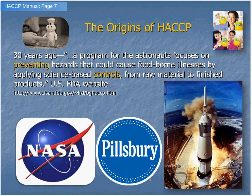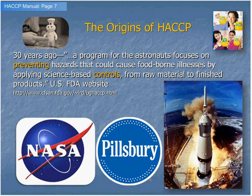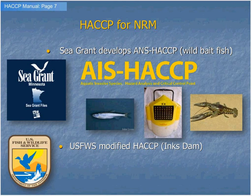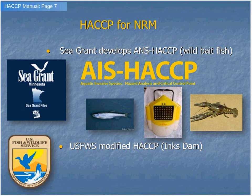HACCP gets its origins from the food industry and the space program. They didn't want contaminants going up into space with the astronauts, so they came up with this process. The food industry then got a hold of it and simplified it. Sea Grant in Minnesota developed HACCP for their wild bait fish industry so they weren't unintentionally moving invasive species around while harvesting wild bait fish. After a few years, the Fish and Wildlife Service developed a HACCP program, which is why I'm speaking to you here today.